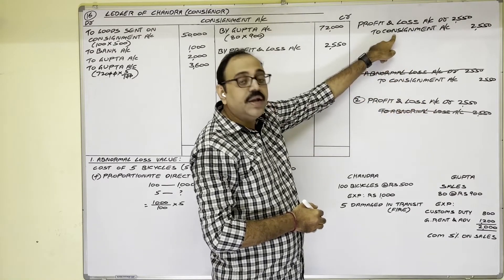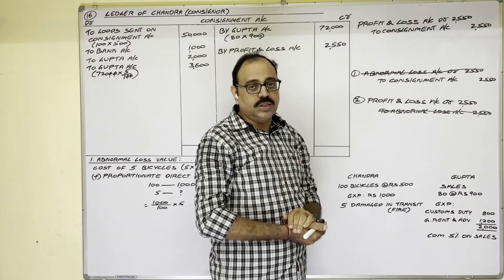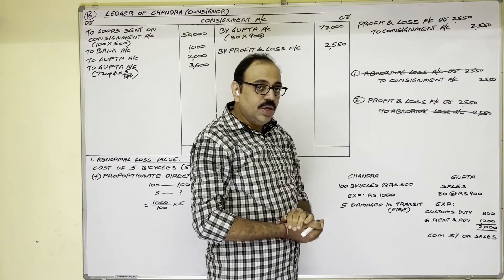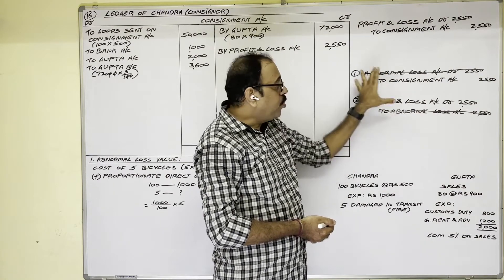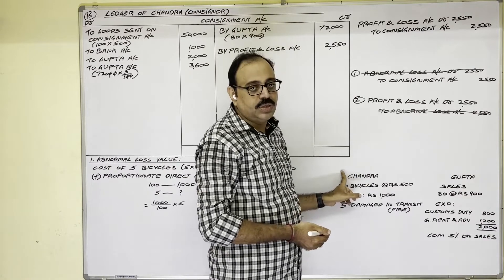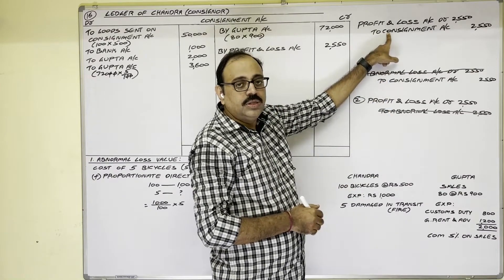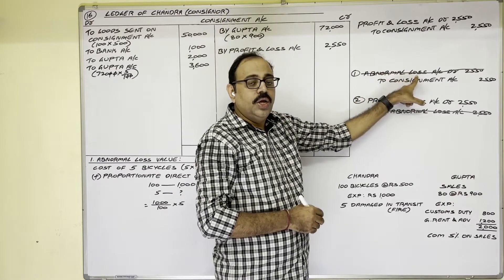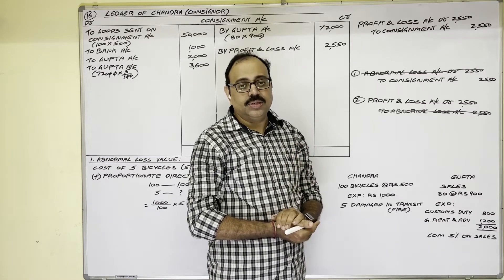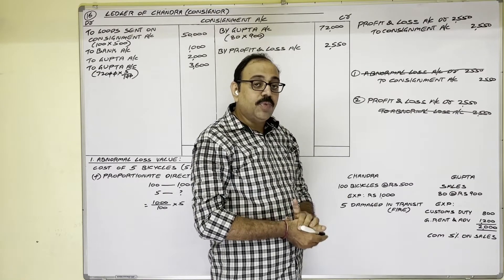So instead of writing two entries, we can write the direct entry: Profit and Loss Account Dr. to Consignment Account 2550. However, if the question asks to prepare an Abnormal Loss Account, then you must write both entries separately. In the present problem only the consignment account is asked, so the direct entry is used. Note: in some books you may see other names — Stock Loss Account, Loss in Transit Account, or Accidental Loss Account — all refer to the same thing.